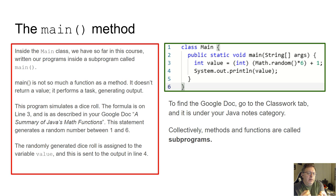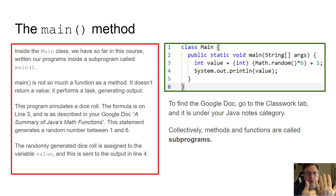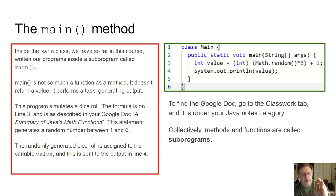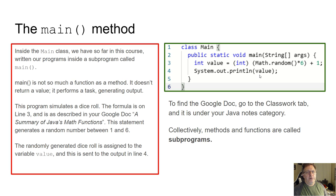So we get a number from zero to five — that's six different values, but not ideal for a dice roll. When we add one at the end, it bumps everything up: the lowest shifts from zero to one, the highest shifts from five to six. So we shift the range from zero-to-five up to one-through-six. Whatever number is generated — one, two, three, four, five, or six — gets stored in the integer variable 'value' and then printed out to the console.